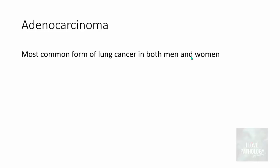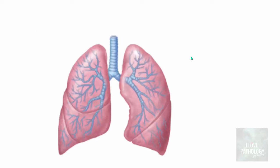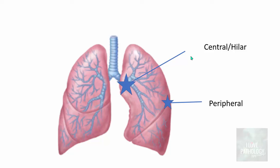Firstly, adenocarcinoma — the most common form of lung cancer in both men and women. Grossly, all lung cancers can have different appearances depending upon their location: central or hilar, versus peripheral. Central cancers are usually larger lesions, and are most often squamous cell carcinomas or even small cell carcinomas. Peripheral carcinomas most commonly are adenocarcinomas.